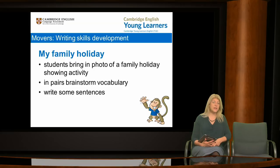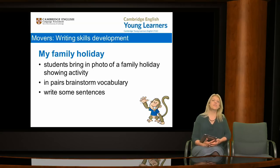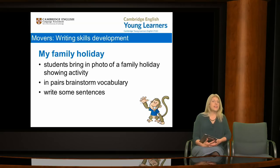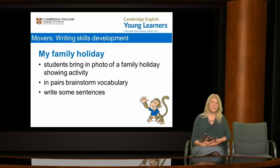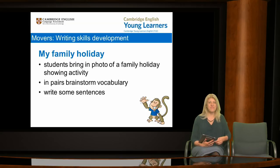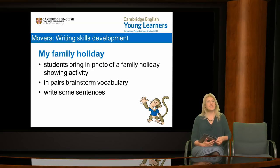The next activity is called 'My Family Holiday' and focuses on both assessment criteria for Movers Part 6 — comprehensibility and relating sentences to a picture. For this activity, ask students to bring in a copy of a photo from a family holiday — it should be a photo of their family doing an activity, not just a portrait style photo. Then ask students to show their photo to their partner. In pairs, students brainstorm vocabulary related to the photo. Students may ask about vocabulary that isn't on the Movers word list, but this is fine — if students are keen to know a new word in English, just give it to them. Next, ask students to stick the photo on a piece of paper and write two or three sentences about the photo using as much of the vocabulary they brainstormed as they can. This is a nice personalised activity.